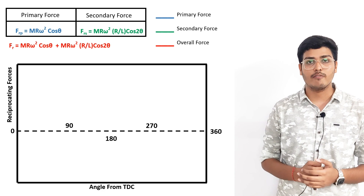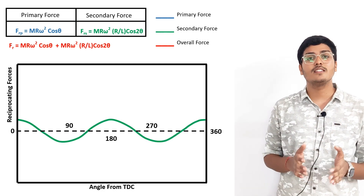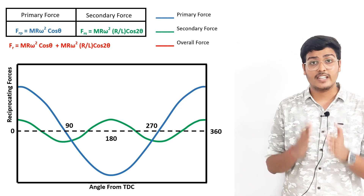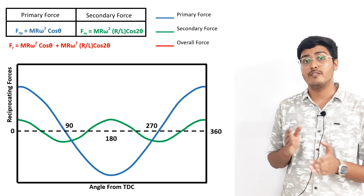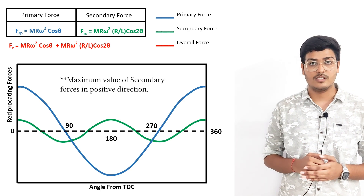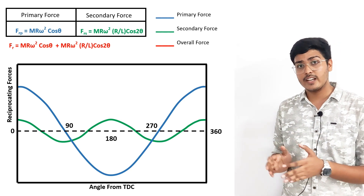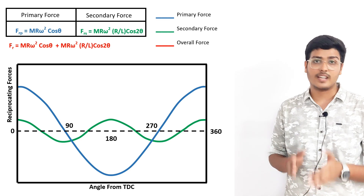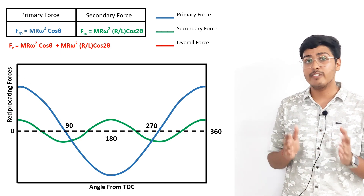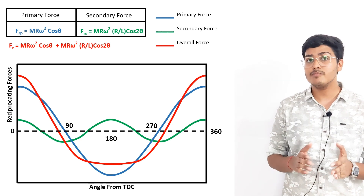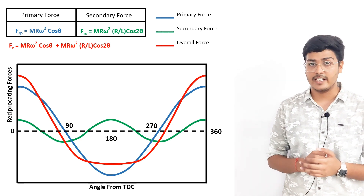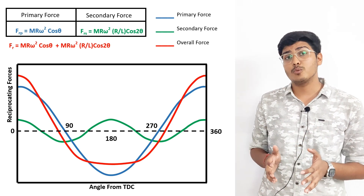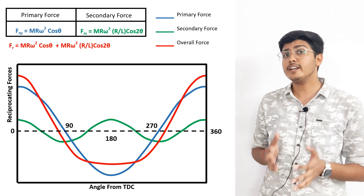If we plot the curves of primary and secondary forces we get the following curves. At θ = 0° the piston is at TDC, giving the maximum value of primary and secondary forces. At θ = 180° the piston is at BDC, giving the maximum value in the negative direction. At θ = 360°, after one complete rotation, the piston is again at TDC giving the maximum positive value. Adding both forces shows the maximum reciprocating forces occur when the piston is at TDC. The acceleration of the piston is continuously changing, and we need to balance these reciprocating or inertial forces.